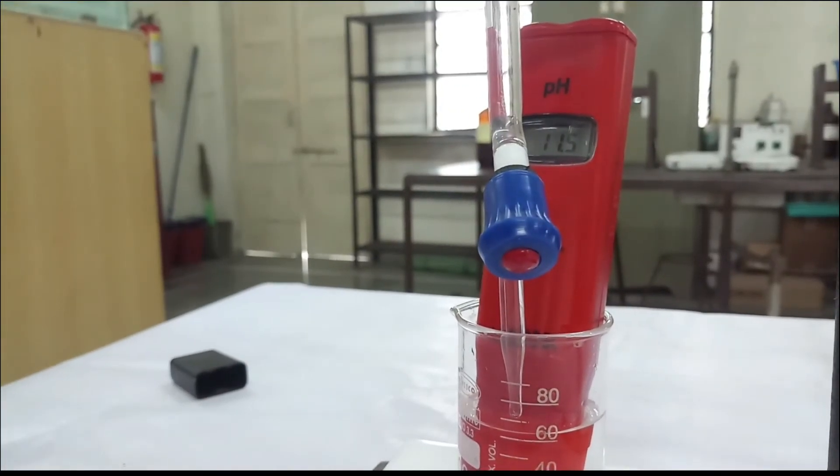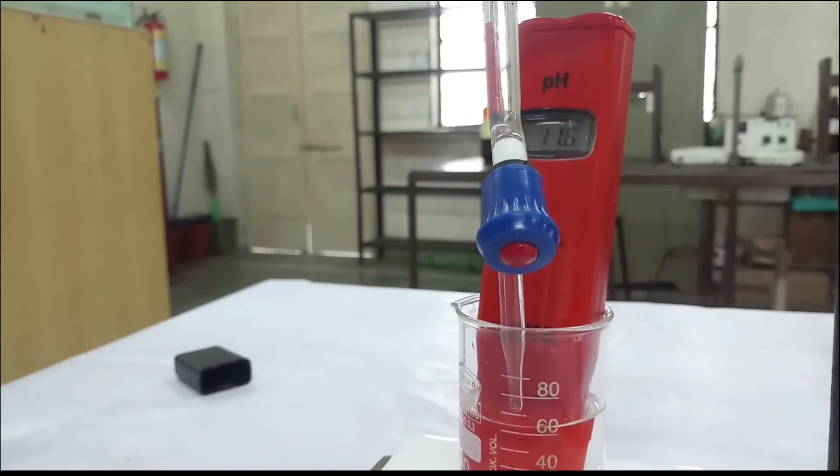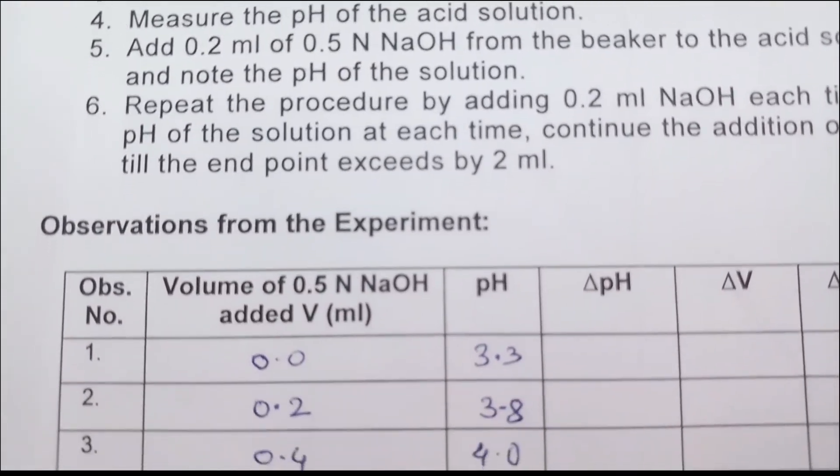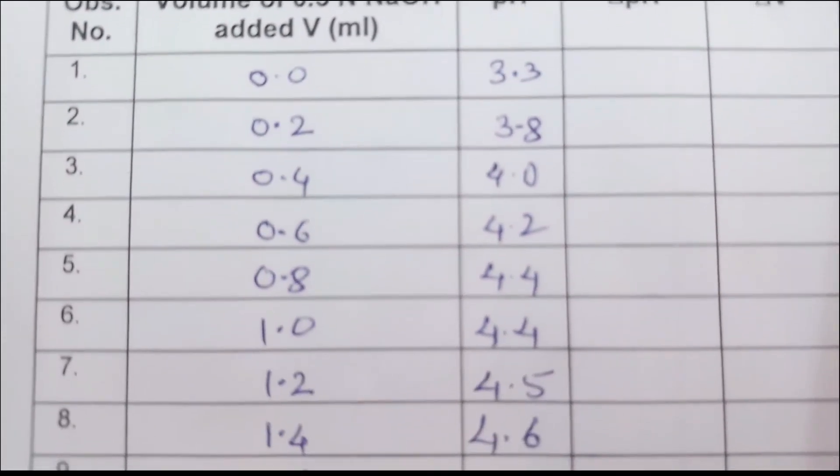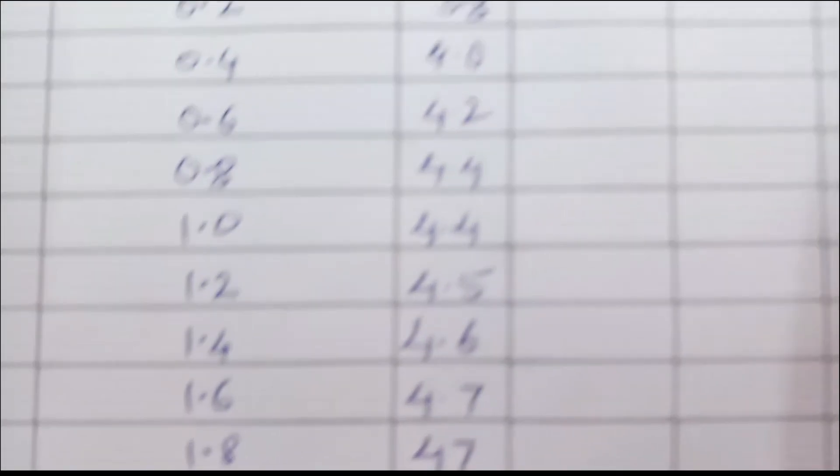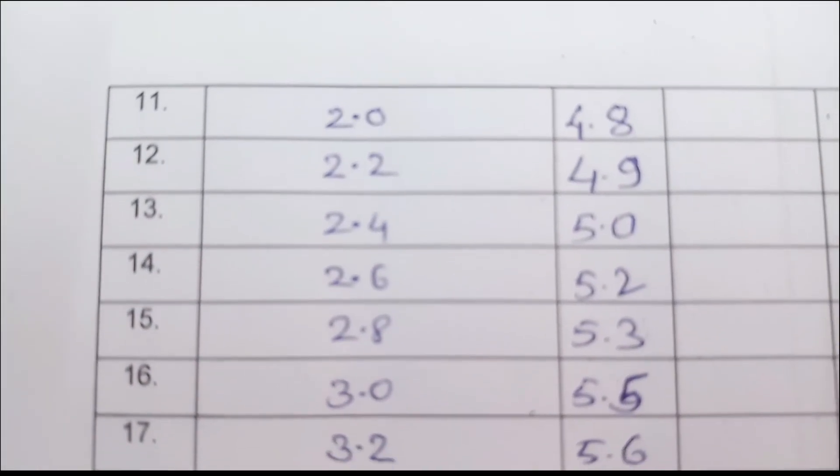So 11.2, 11.4, 11.5 and so on. So these are the readings. Here you can see 4.4 was repeated. In this case also you will see 6.3 is also repeated.